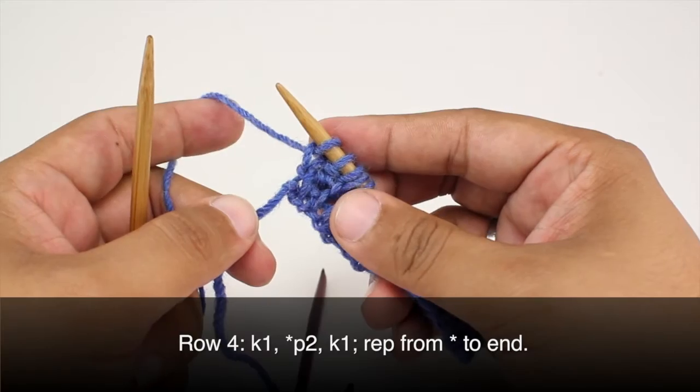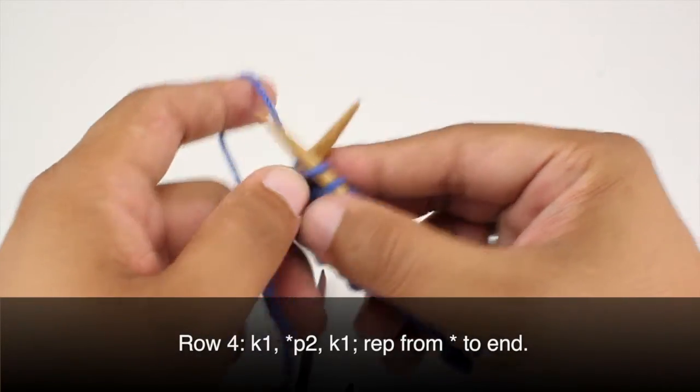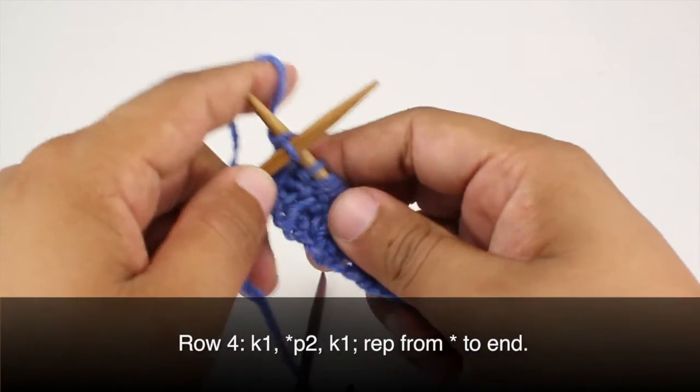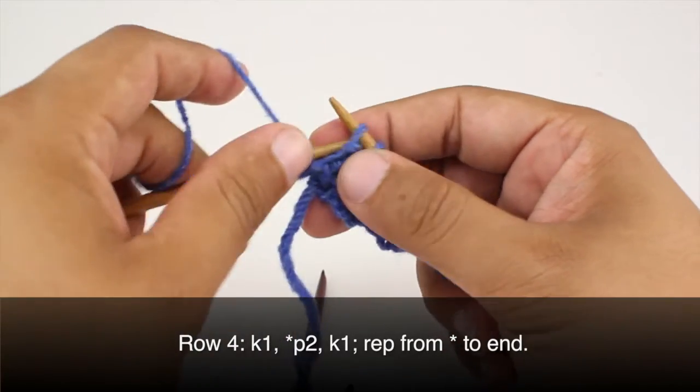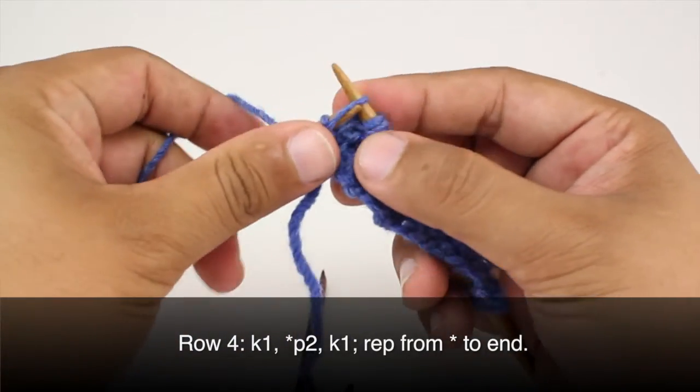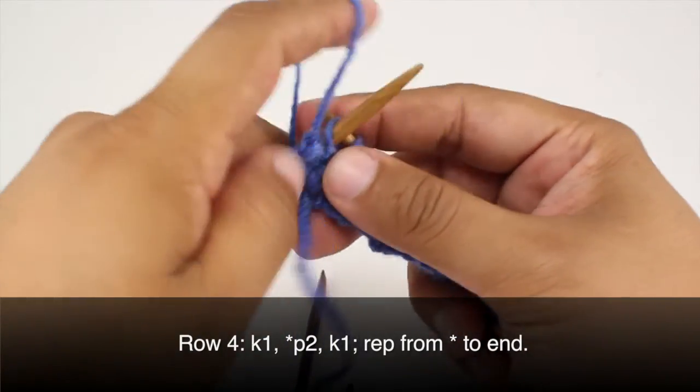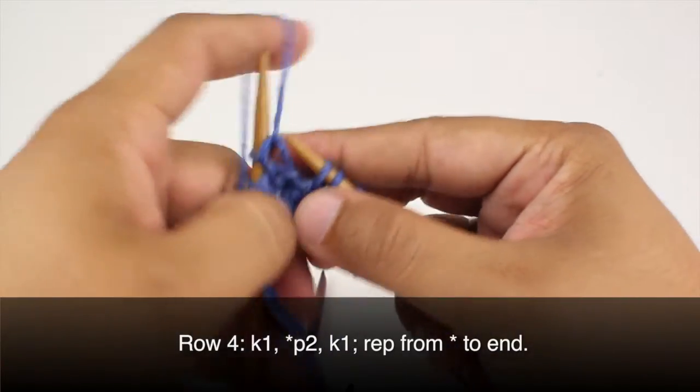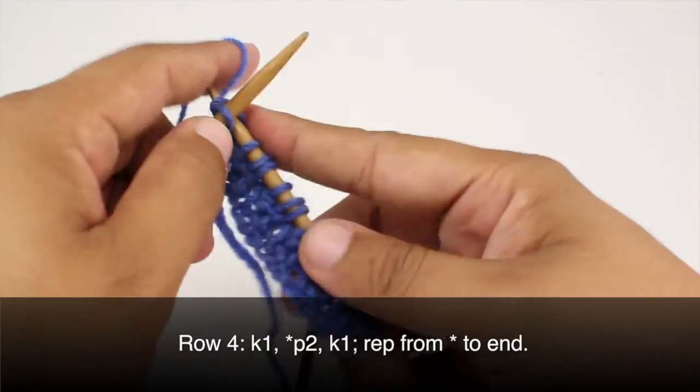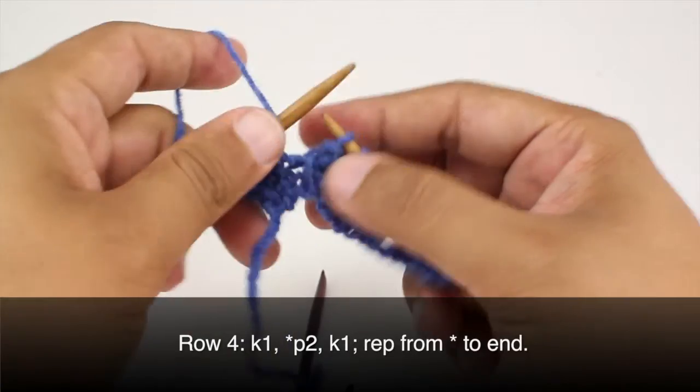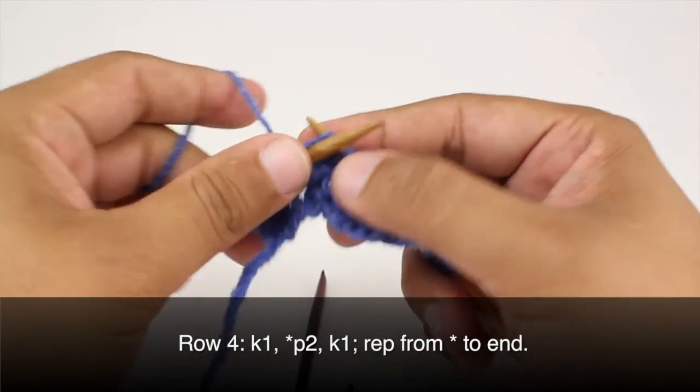Row 4: We're going to repeat row 2. So we'll start by knitting 1. Then we'll begin our repeat by purling 2. And we'll finish our repeat by knitting 1. So we'll purl 2 and knit 1 until the end of the row.